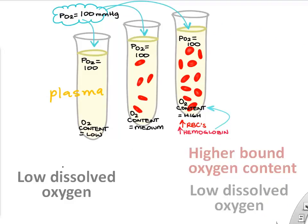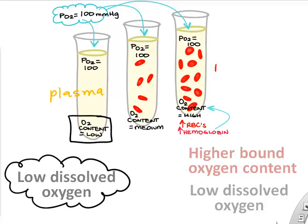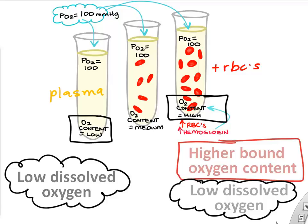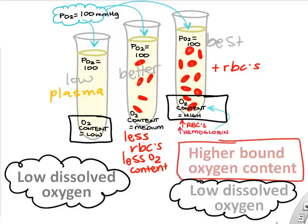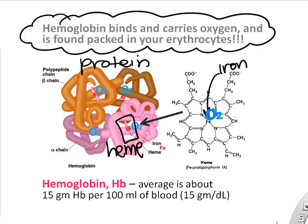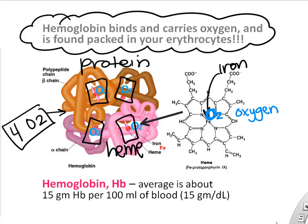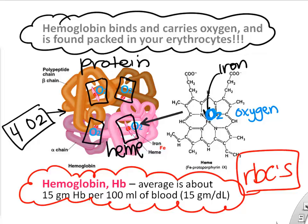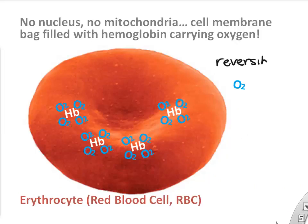The solution for low oxygen solubility in plasma is to have red blood cells packed with an oxygen carrier called hemoglobin. Looking at plasma alone, it has a PO2 of 100 but a very low oxygen content. But if we add red blood cells and hemoglobin, we still have a PO2 of 100 but now we have lots of oxygen bound to hemoglobin in our red blood cells. So the more red blood cells, the more oxygen content we have in our blood. Hemoglobin is a protein with a heme molecule that has iron which can reversibly bind oxygen. Each hemoglobin protein has four hemes and each heme can bind one oxygen, so each hemoglobin can bind four oxygen molecules. These are packed into your red blood cells so that we can carry oxygen around our body, and it's a reversible binding so we can pop the oxygen on and off.